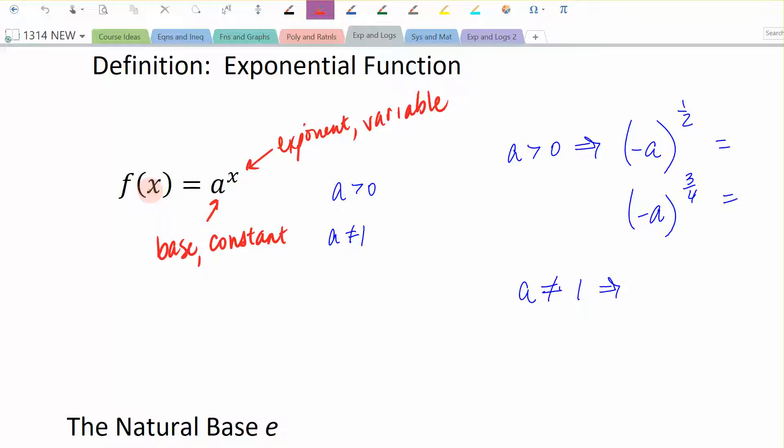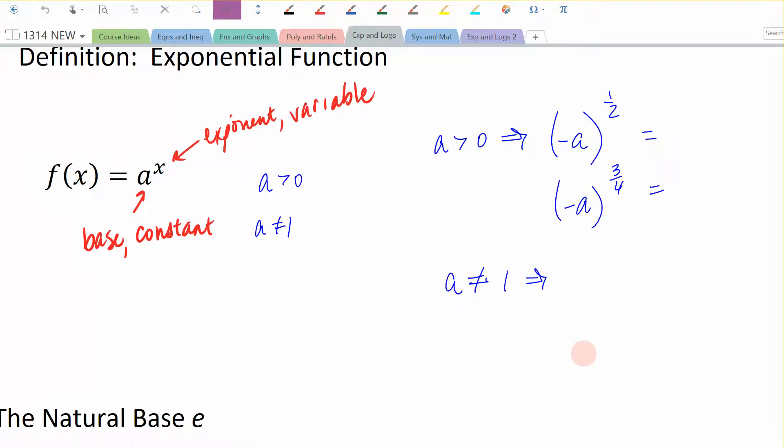Now, we have some restrictions on this base a. The base a must be greater than zero, but it cannot be equal to one. So these are the two requirements for the base a. Now you might ask yourself, why is that the case? How come the base a has to be greater than zero? Let's come over here for just a second and let's talk about a. If I let a be a negative number, a number less than zero, and I'm going to raise it to, let's say, the one-half power,